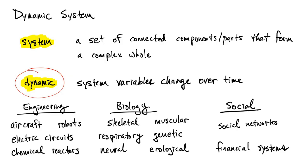Dynamic systems are found widely throughout engineering, biology, physical sciences, social sciences, and many other places. We've already talked about examples like aircraft and robots. You could also imagine describing the movement of bones in a biological setting.